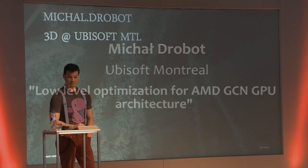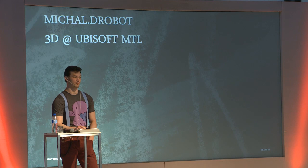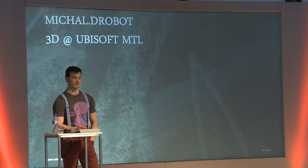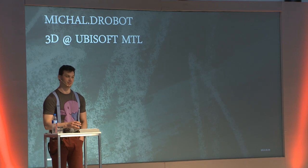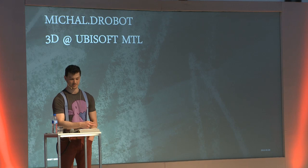First of all, I'm really happy to see so many faces here. I was not expecting that many people at this presentation, so this is a good start. My name is Michal Drobot, and I'm currently one of the tech ninjas at Ubisoft, working on optimizing a couple of projects for Xbox One and PS4. What I'd like to share today is knowledge our team gained during the last couple of months working on those consoles, about squeezing additional performance from the math you get on GCN architecture.